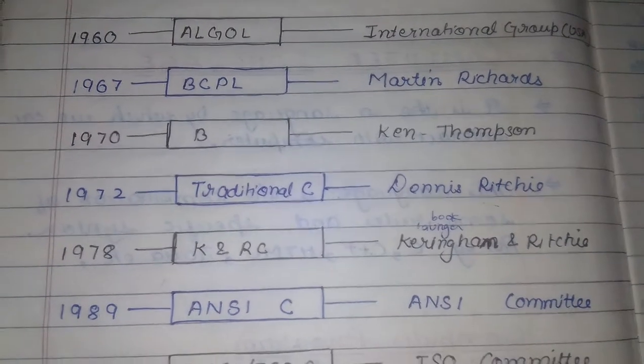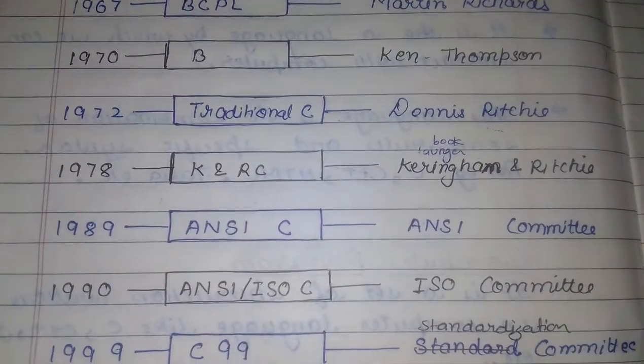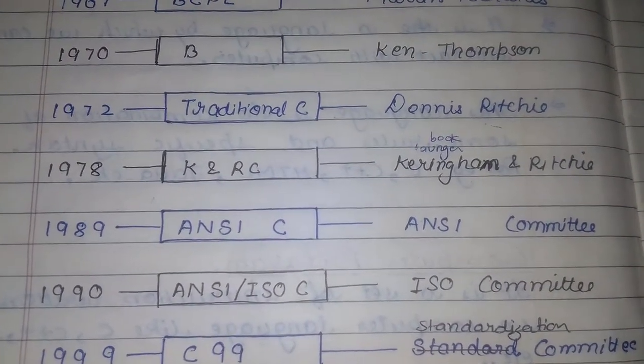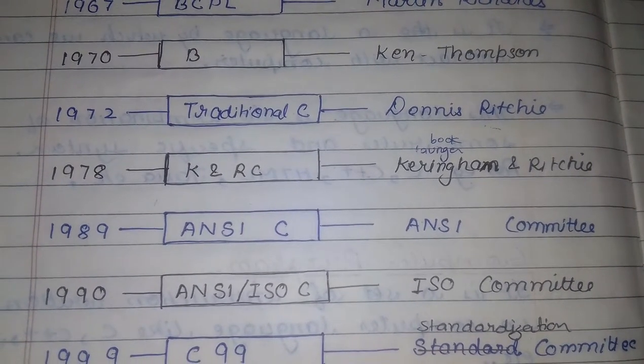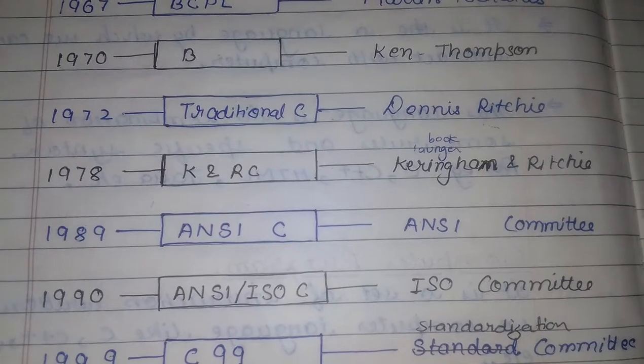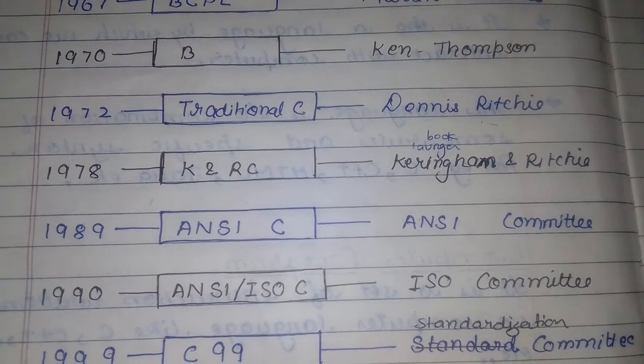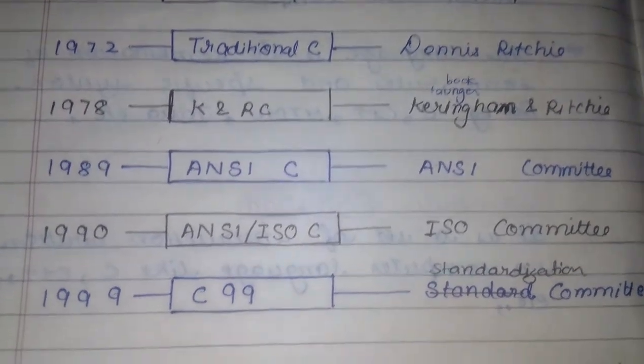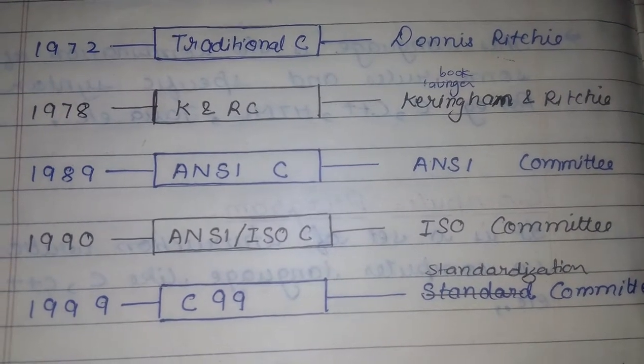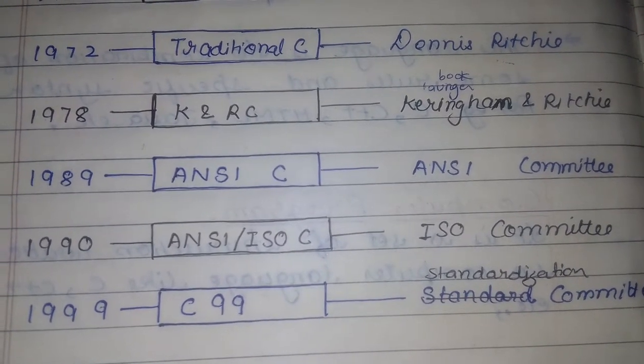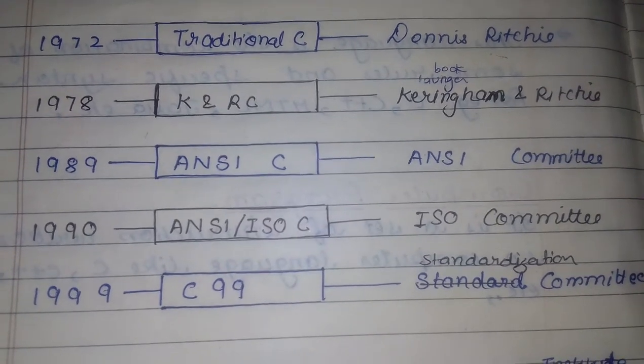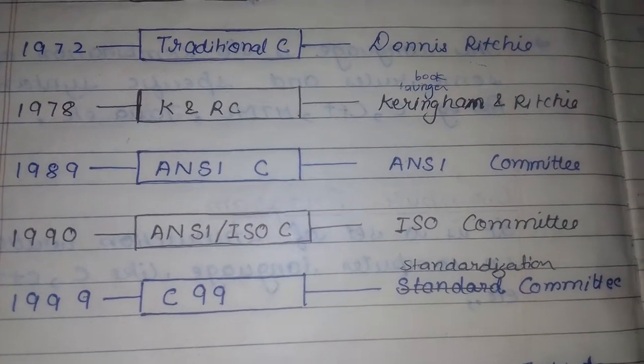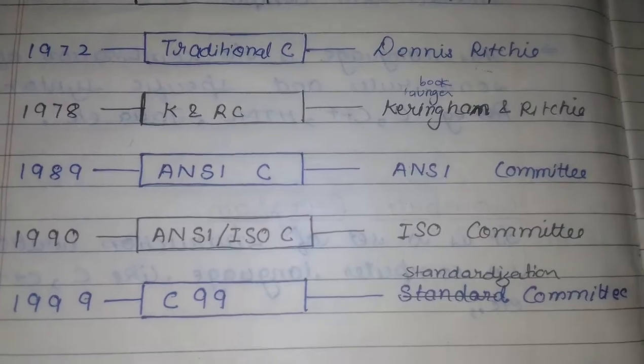In 1978, K&R C by Kernighan and Ritchie. In 1989, ANSI C by ANSI Committee. In 1990, ANSI ISO C by ISO Committee. In 1999, C99 standard by committee.